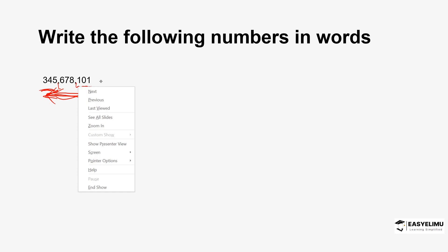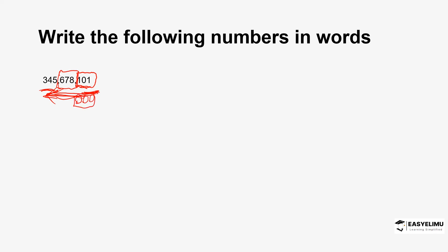The last group, you just read them as they are — one hundred and one, just like that. Now this second group here, we assume the other digits are zero zero. So this second group, if it were a number like two, it would be read as two thousand. So this group stands for thousands — you'll be reading it as 678 thousands.